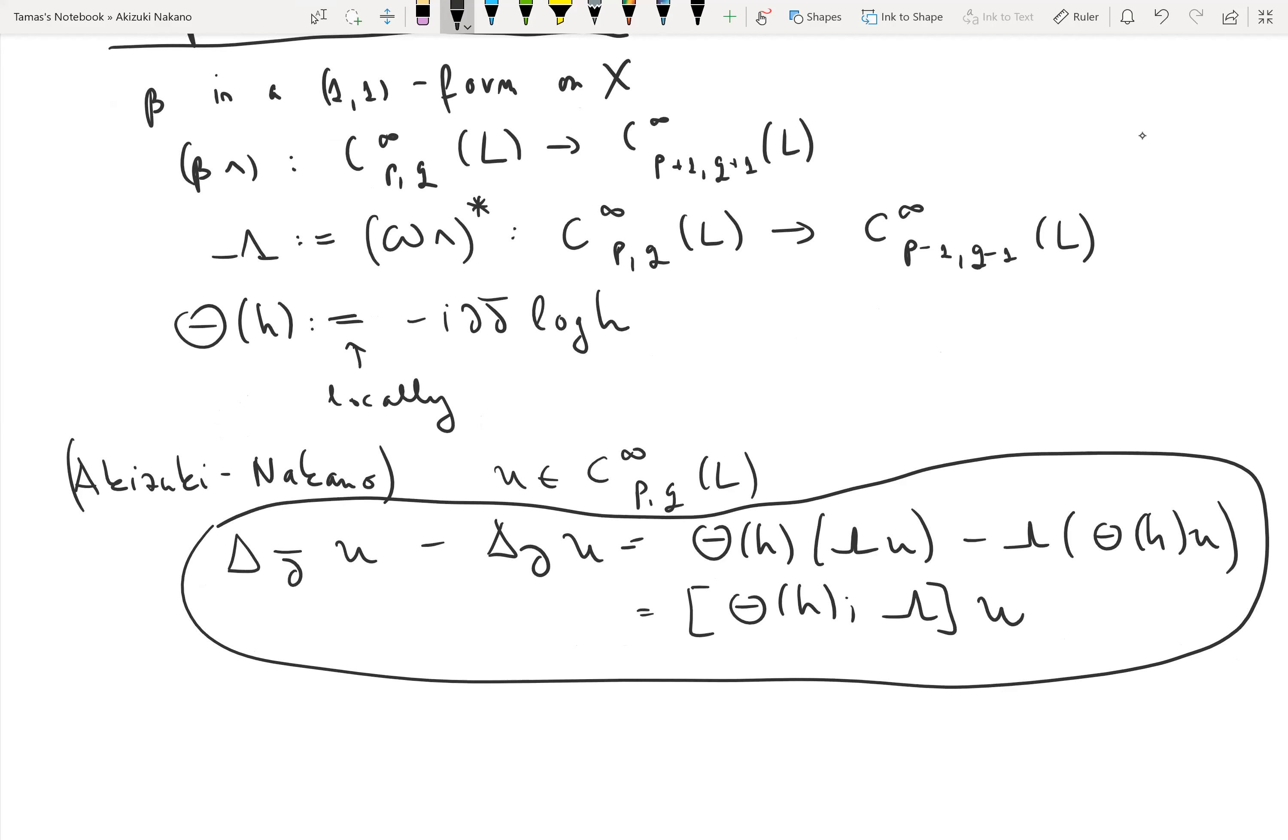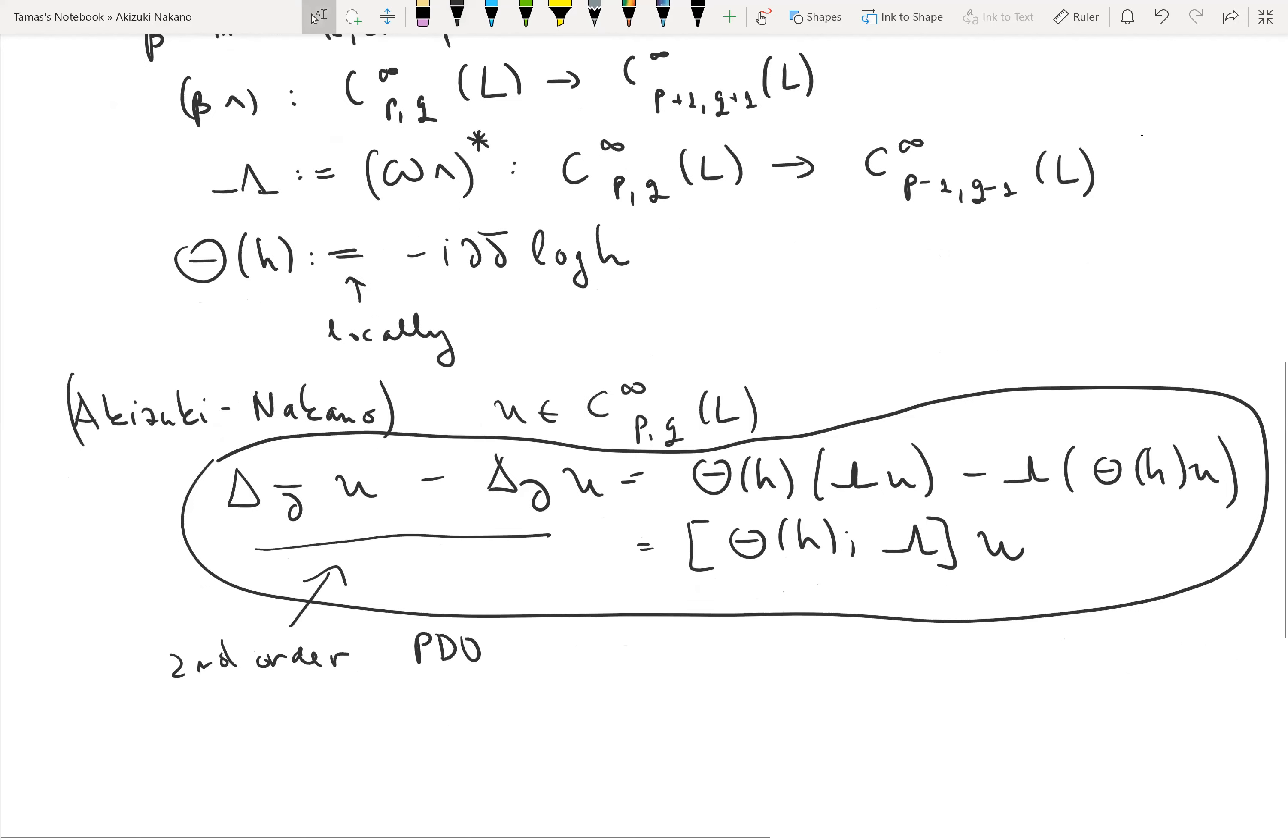Now the good thing here is that on the left you see the difference between two second-order partial differential operators. The great thing on the right-hand side is this is a tensor map, so there's no differentiation at all—maybe you can call it zero-order, a tensor map.